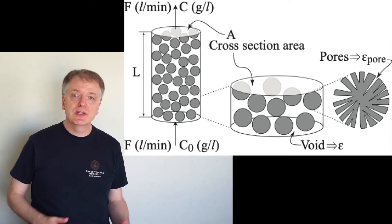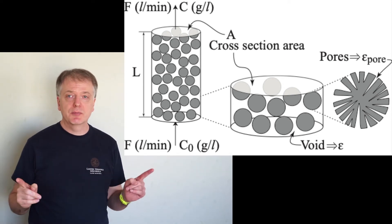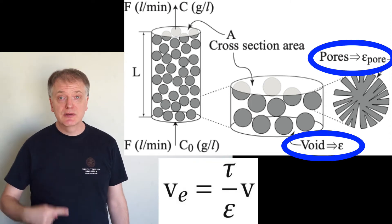In batch-wise column adsorption we need to differentiate between two different porosities and two different velocities.